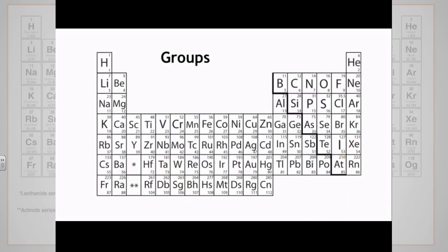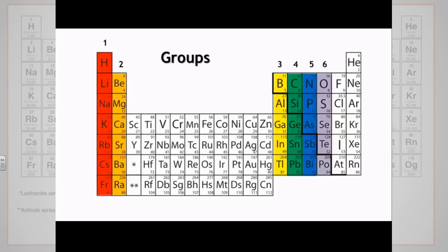The columns going down, from top to bottom, are the groups. Elements in the same group also have something in common. Elements in the same group have the same number of electrons in their outermost shell. The electrons in the outer shell are called the valence electrons. This just means that these are the electrons available for reactions and bond formation. The number of electrons in the outer shell governs elements reactivity, which is why elements in the same group have similar properties.